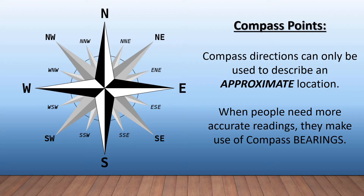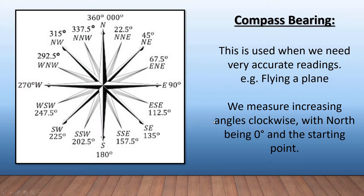Compass bearings still use the same points — north, north-north-east — but we are using degrees now. So north-northeast is 22.5 degrees, 45 degrees, 67.5 degrees, 90 degrees east. This is used when we need very accurate readings, like flying a plane.